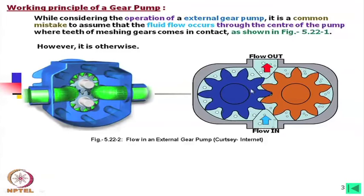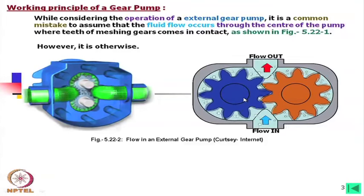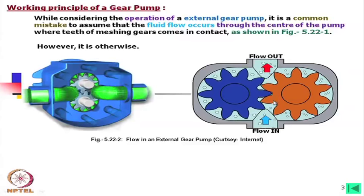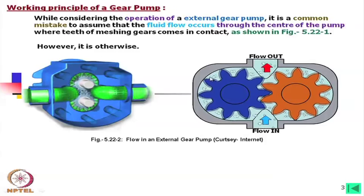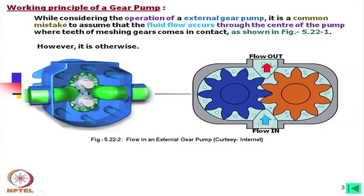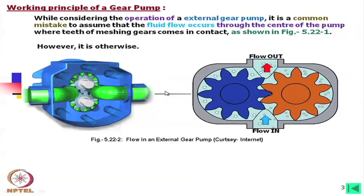Among these two, one of them is the driving one. In this case, let us consider the blue one is the driving one. Then what we observe is that oil is coming in from this side, then it is being trapped and it is going out. If you look into this view, oil is coming in like this and oil is going out like this. So this is the direction of flow.